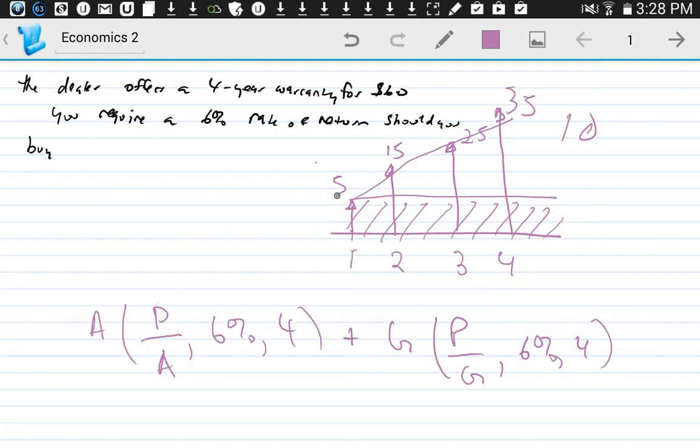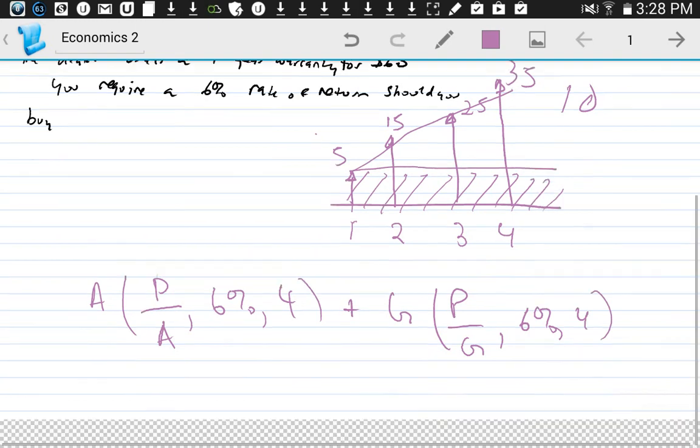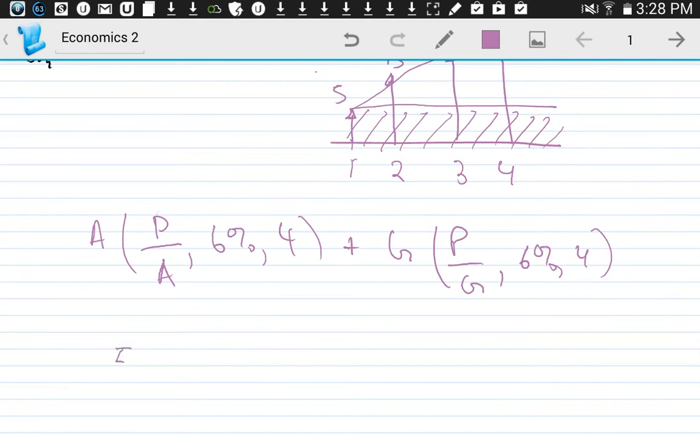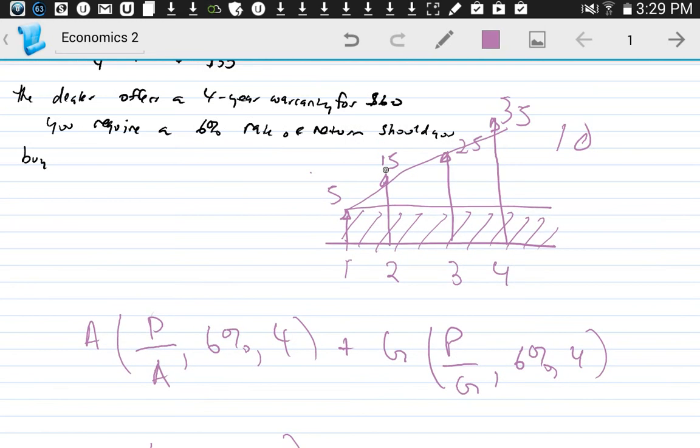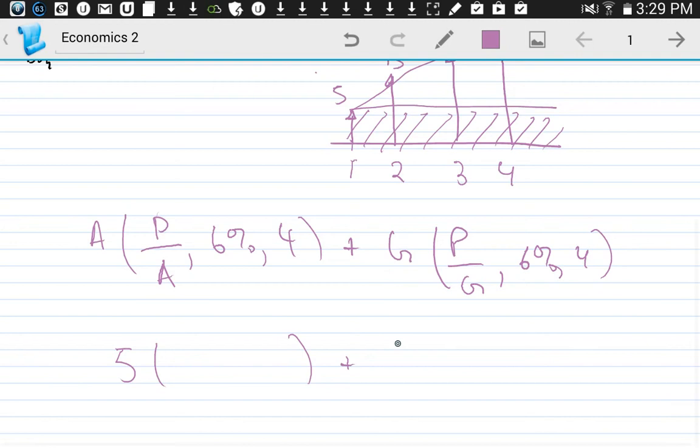And A, again, it's five over the annualized period, so we have five, plus G, which increased by ten, so it would be ten.